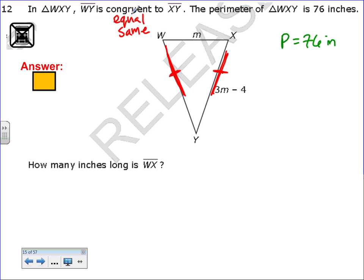I have this side, and since it's equal to that, this side has to be that. Now I just need to add them all up. So I have 3N minus 4 plus 3N minus 4 plus N equals the perimeter, which is 76.